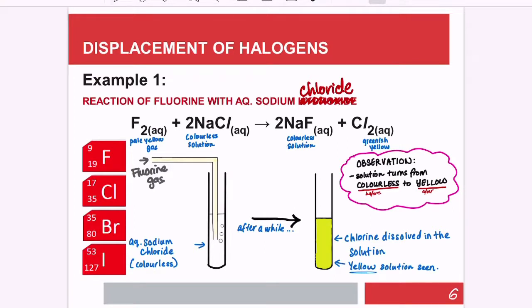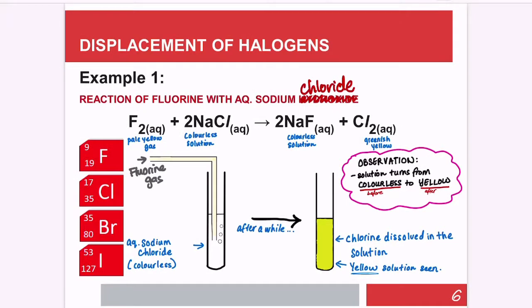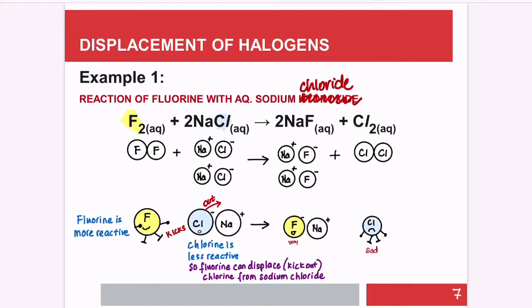After the reaction, the observation is that the solution turns from colorless to greenish yellow. Fluorine is more reactive than chlorine, therefore fluorine will overtake the position of chlorine from sodium, kicking the chlorine out. The observation is based on the chlorine — this greenish yellow color is from the chlorine that has been kicked out.